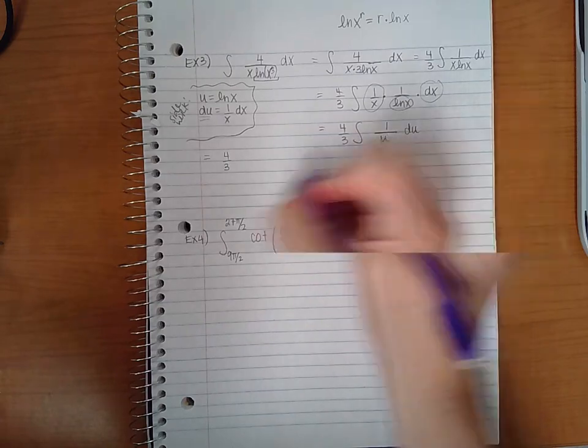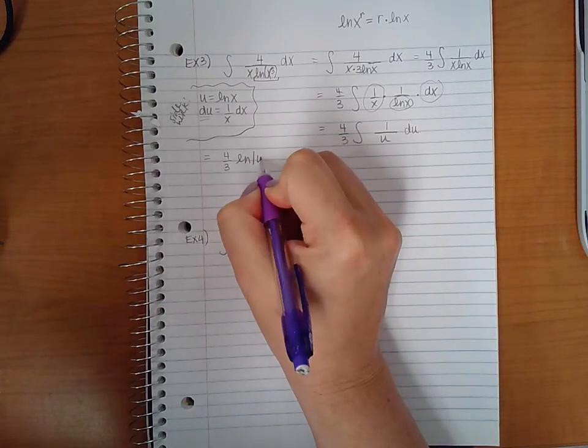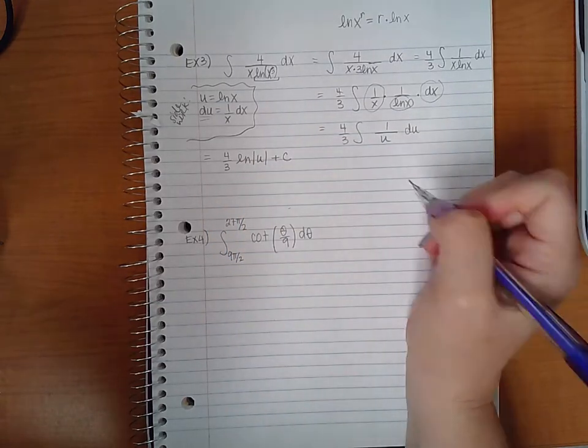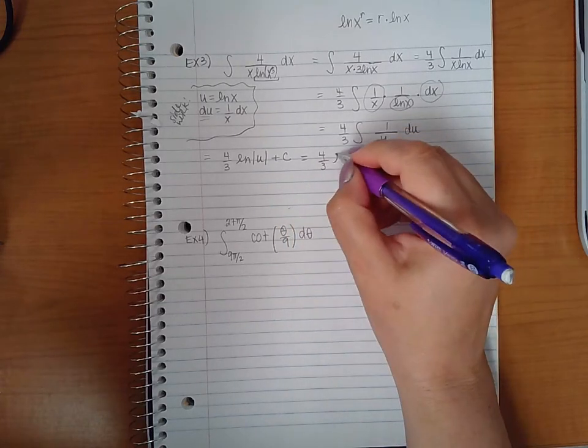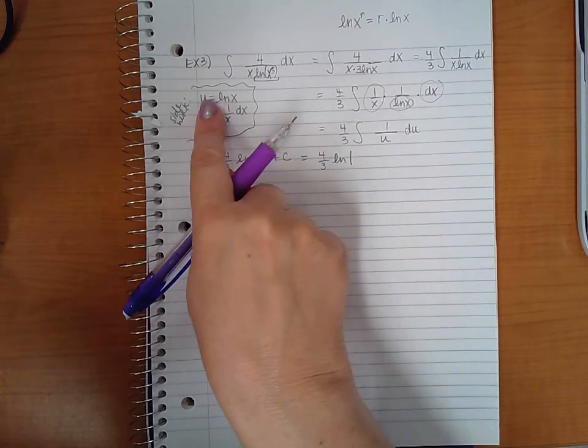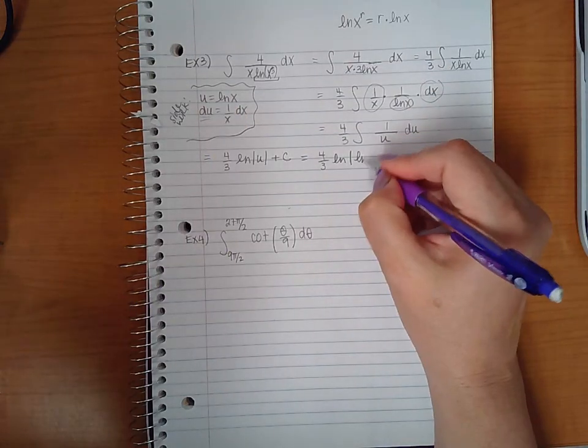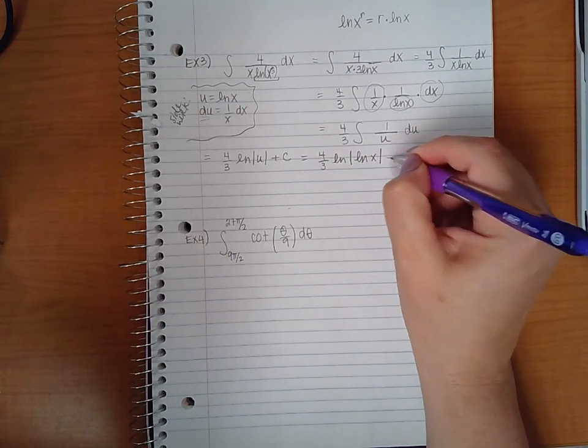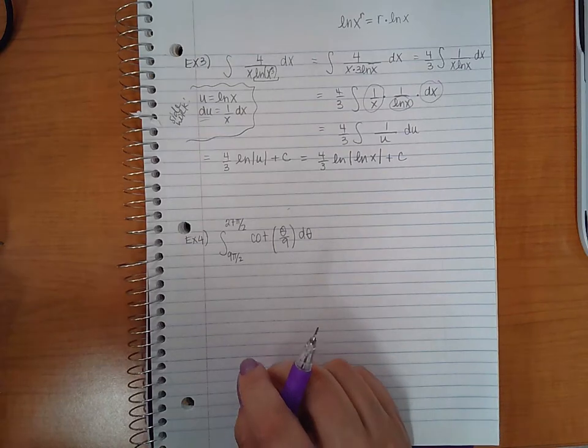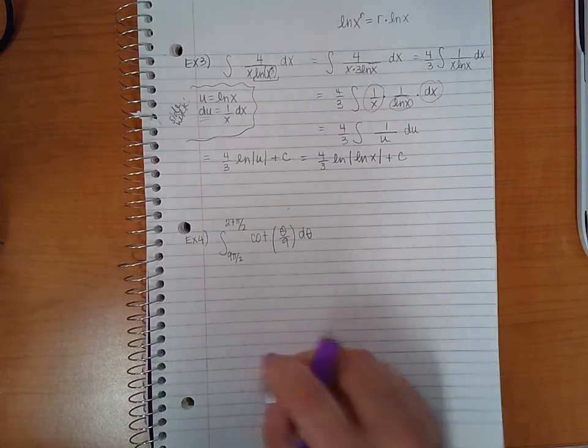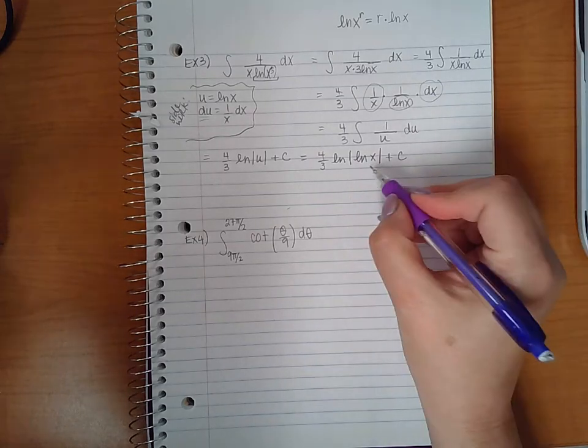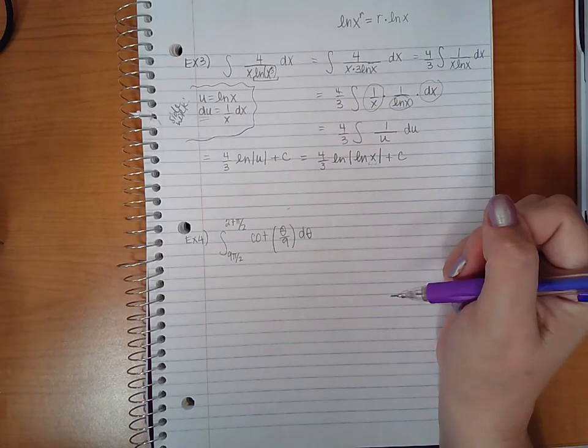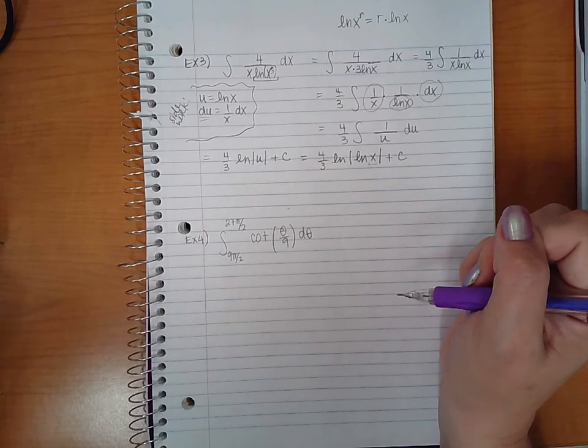When I integrate it, it's going to be the ln of the absolute value of u plus c. Then if I back substitute what u was, I get the ln of the ln of x plus c. Notice there's no extra bars inside here, it's just that as it is by itself.